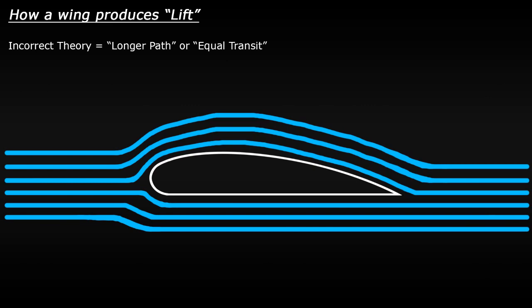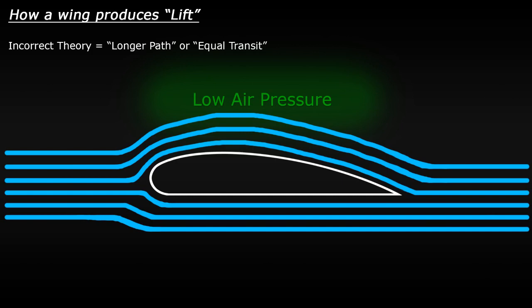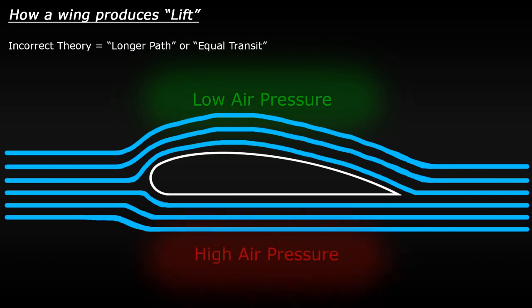As the air speeds up, it causes an area of low air pressure above the wing. The air which passes underneath the wing slows down because it has a shorter distance to travel, and this causes high air pressure below the wing. The end result, this theory states, is that it's this pressure difference above and below the wing which causes the wing to move upwards, and this upwards force is more commonly called lift.